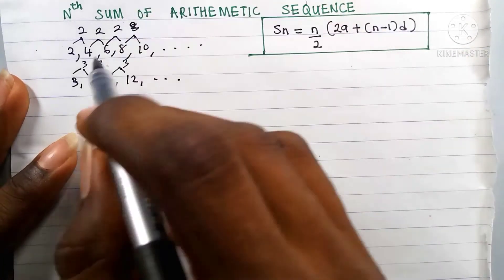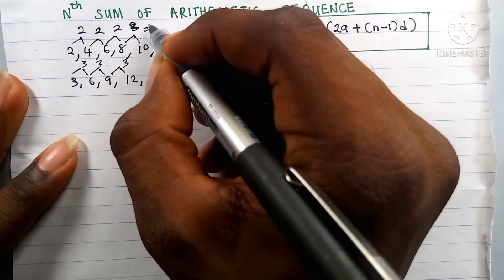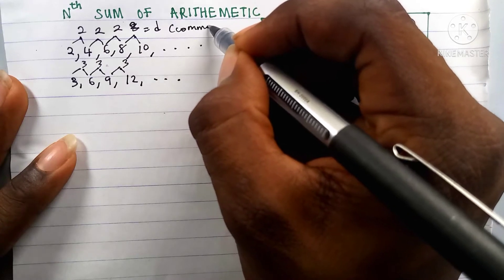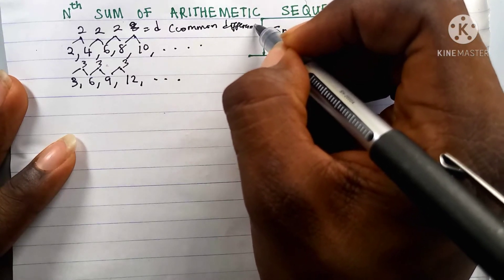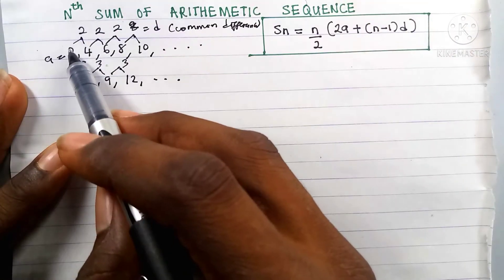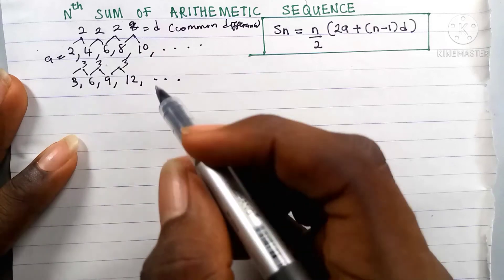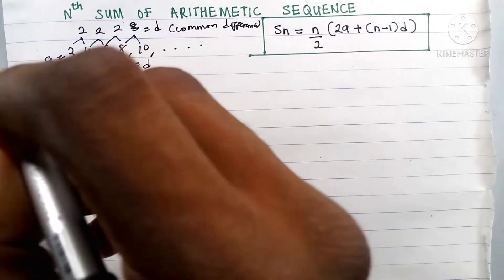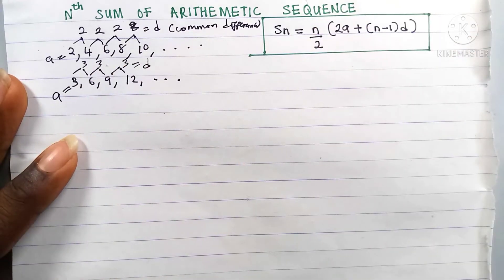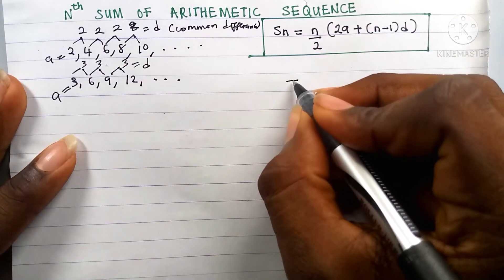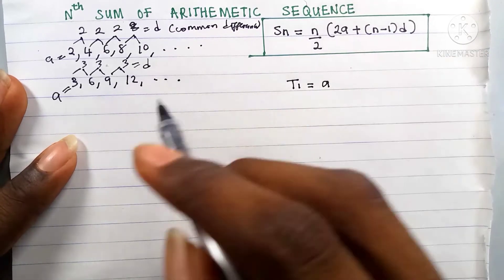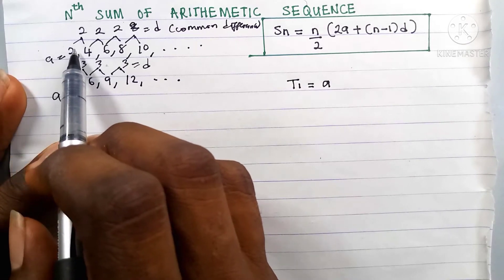In the first sequence the common difference d is 2, and the first term a is 2. In the second sequence the common difference d is 3, and the first term a is 3. So for an arithmetic sequence, the first term t1 is equal to a — like here a is 3, and in the other sequence a is 2.